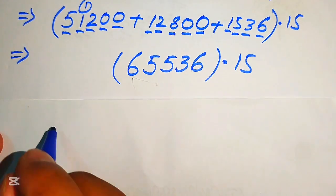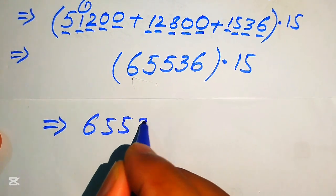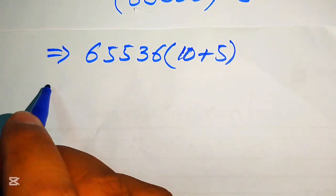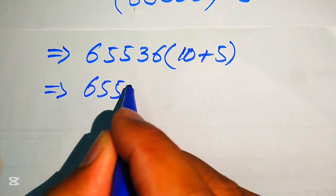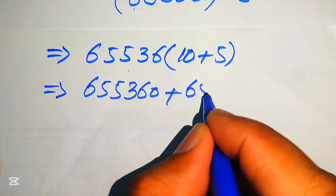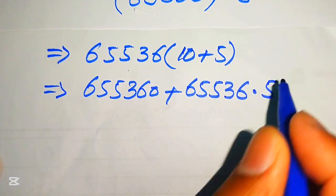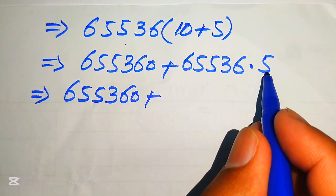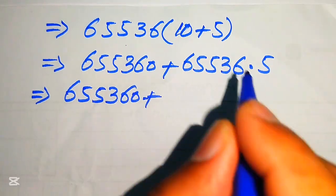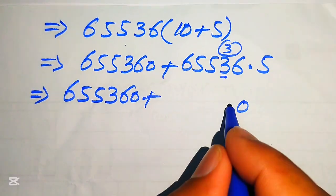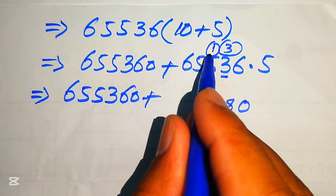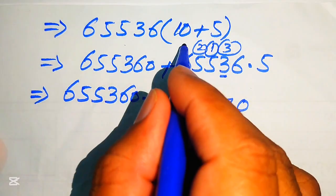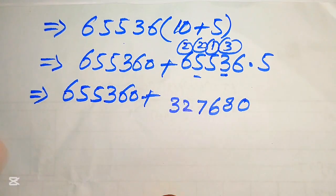Now we multiply 65,536 by 15, breaking 15 as 10 plus 5. Multiplying 65,536 by 10 gives 655,360. Multiplying 65,536 by 5: 5 times 6 is 30, write 0 carry 3; 5 times 3 is 15, plus 3 is 18, write 8 carry 1; 5 times 5 is 25, plus 1 is 26, write 6 carry 2; 5 times 5 is 25, plus 2 is 27, write 7 carry 2; 5 times 6 is 30, plus 2 is 32; giving 327,680.